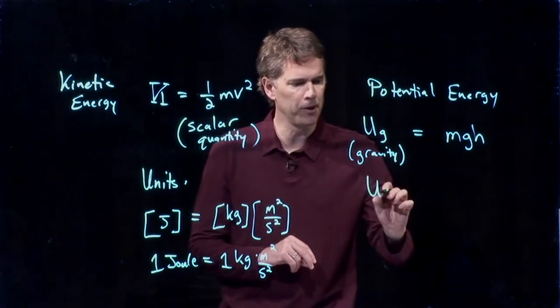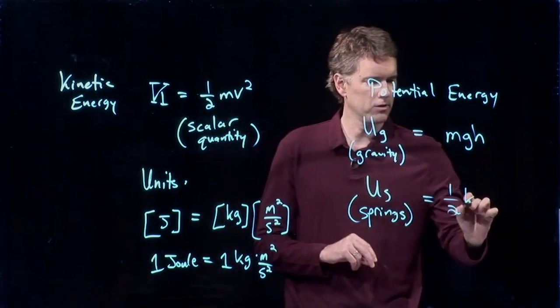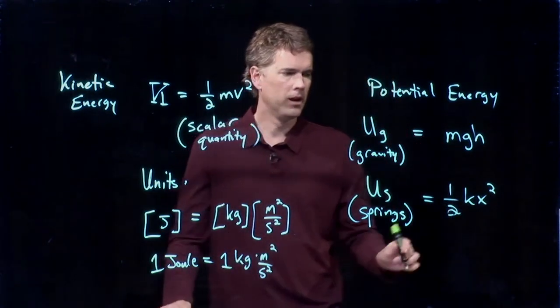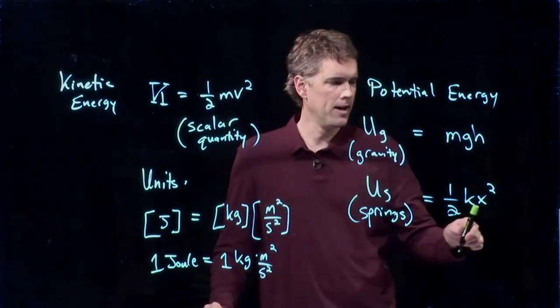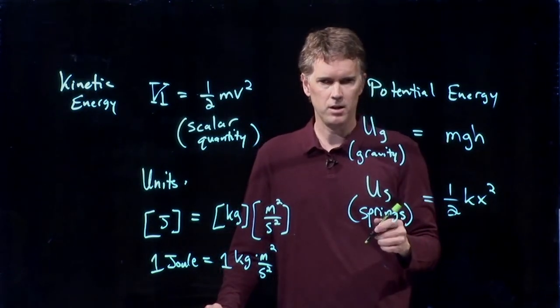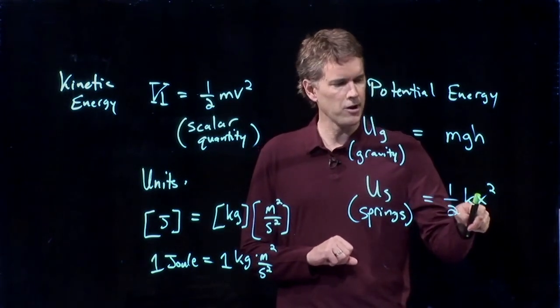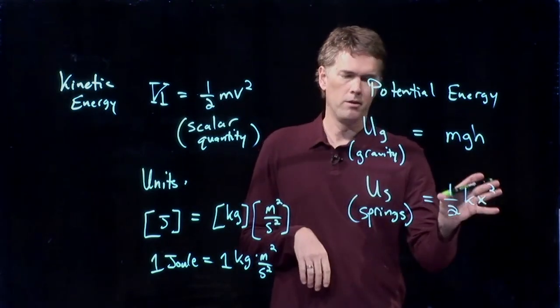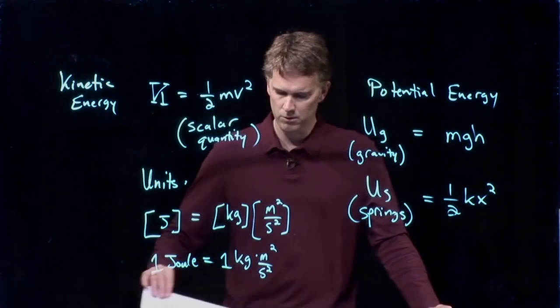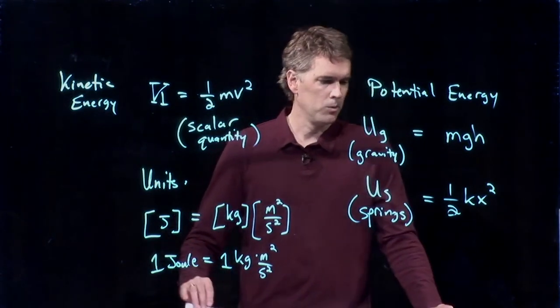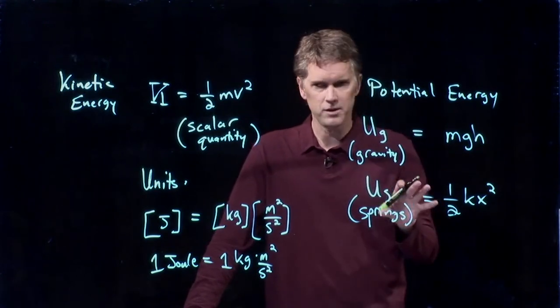But we also have springs. We'll write those with a U sub S. And this is one-half KX squared. K is the spring constant, so it is determined by the size of the spring. X is how far you compress it or stretch it from its equilibrium length. So this one is also quadratic in this variable X. If I stretch it twice as far, I put four times the amount of energy into its potential energy. And we can now think about what happens in different situations. And we're going to take advantage of these definitions.